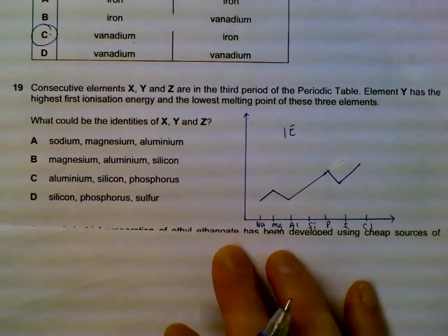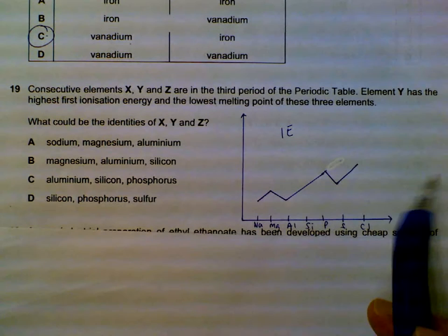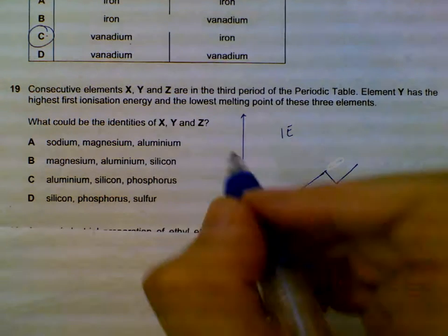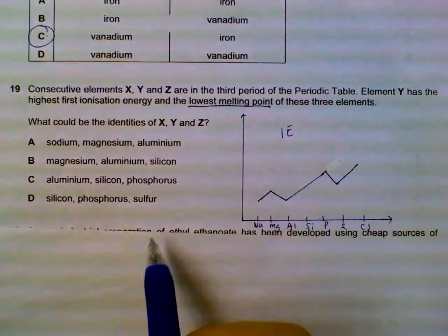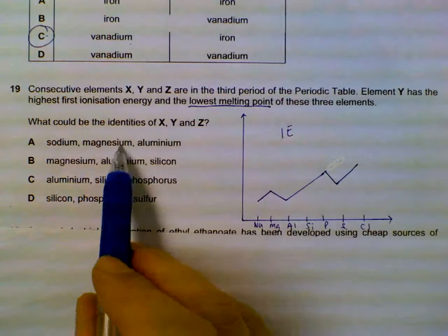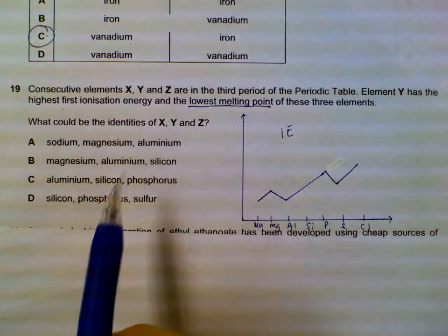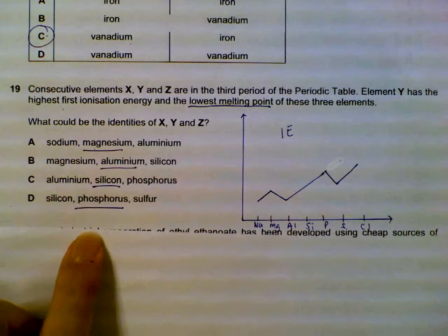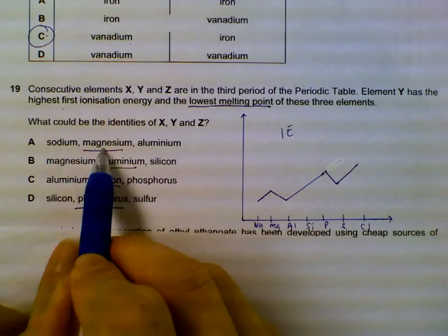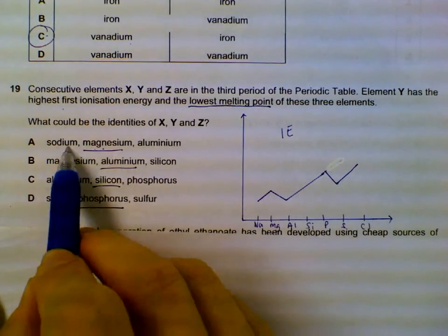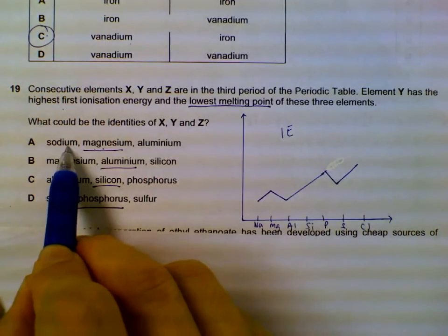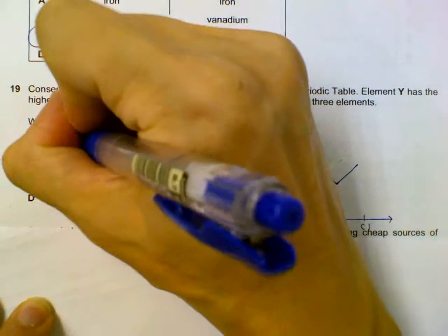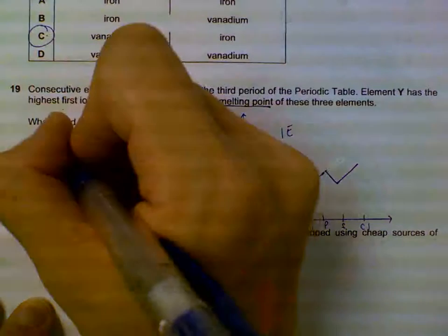Question 19: three consecutive elements in the third period — which has the highest first ionization energy and the lowest melting point? I'll use melting point to compare first and then consider first IE if needed. For option A, sodium would be the one with the lower melting point compared to magnesium, because there are fewer delocalized electrons in the metallic bonding, giving sodium the lowest melting point. So option A is out.